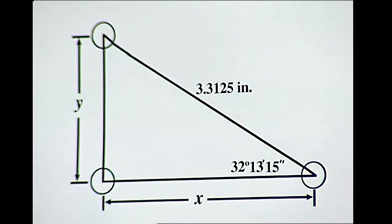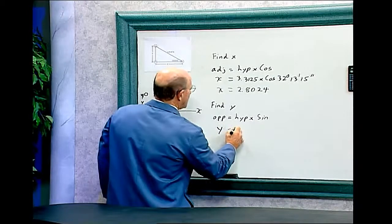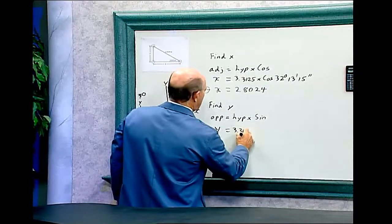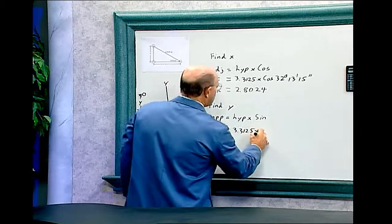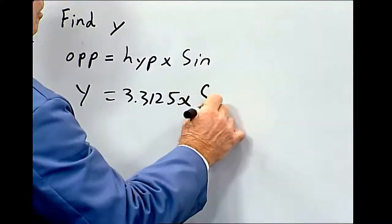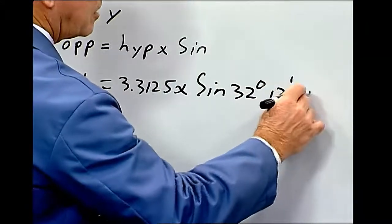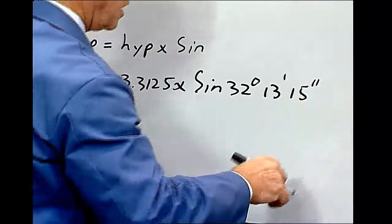So, opposite, and we'll make that y. And the hypotenuse is 3.3125 times sine of 32 degrees, 13 minutes and 15 seconds.